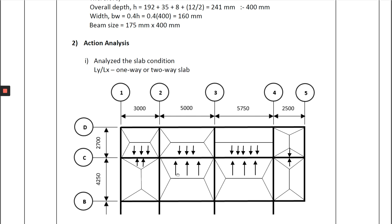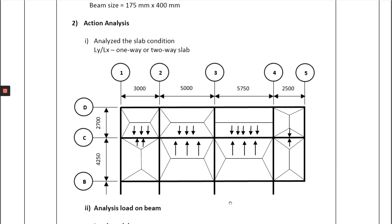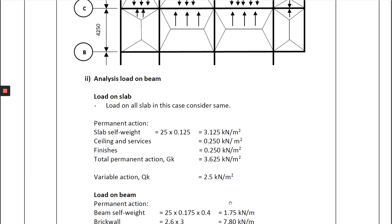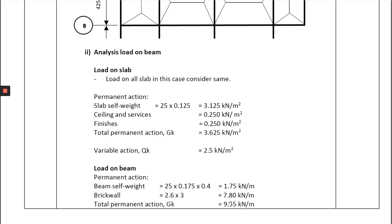I label them as slab 1, slab 2, slab 3, slab 4, slab 5, slab 6, slab 7, and slab 8. Then we have to analyse the load on the beam. First, we calculate the load on the slab. The load on all slabs I consider the same based on my own judgment. If you have a different function for the slab — for example toilet or balcony — the variable actions may be different, so you must check your architecture plan and the floor usage of each area carefully.